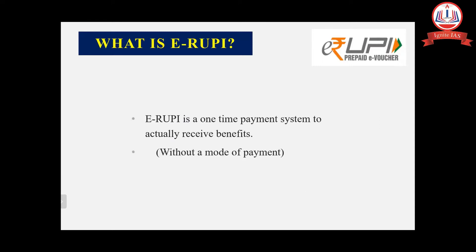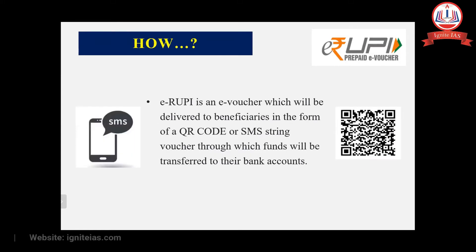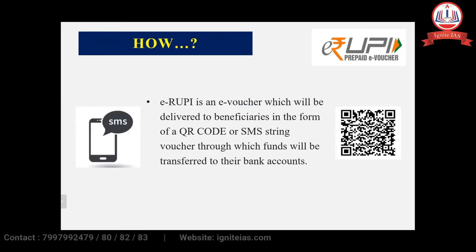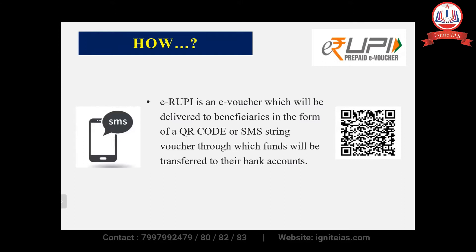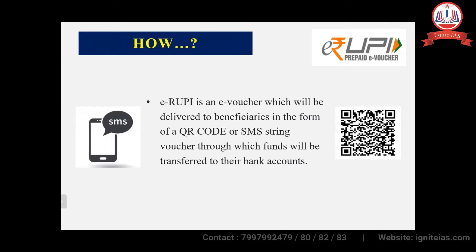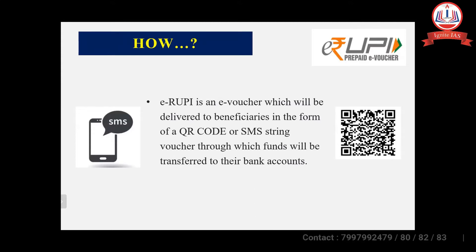E-Rupee is a one-time payment system. This seamless one-time payment mechanism enables users to redeem their vouchers without any mode of payment. These E-Rupee coupons are electronic vouchers provided to recipients in the form of a QR code or a text message, via which cash will be paid directly to their bank accounts. Any government agency or corporation can generate these e-vouchers via their partner banks.